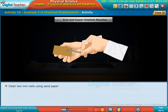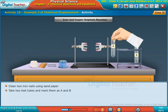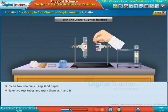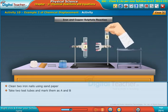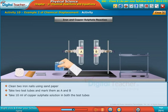Clean two iron nails using sandpaper. Take two test tubes and mark them as A and B. Take 10 ml of copper sulfate solution in both the test tubes.